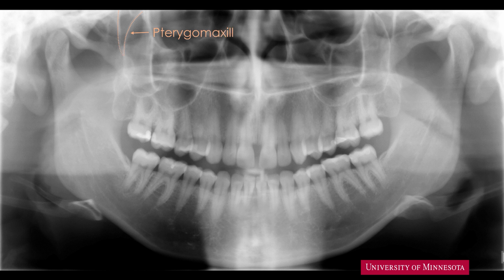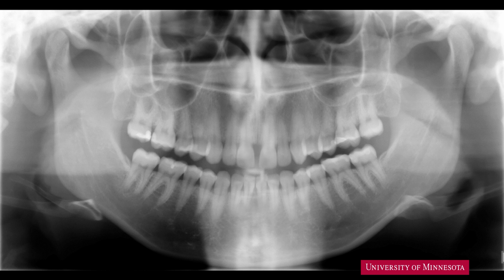Superior to the coronoid process, we have an inverted teardrop-shaped radiolucency called the pterygomaxillary fissure. A number of neurovascular structures are present in this fissure. On the anterior aspect of the ramus, the radiopaque band is the external oblique ridge. Now that we know the sigmoid notch, the coronoid process, and condylar head, we can see a radiopaque band on the superior aspect of these structures — this is the zygomatic arch.